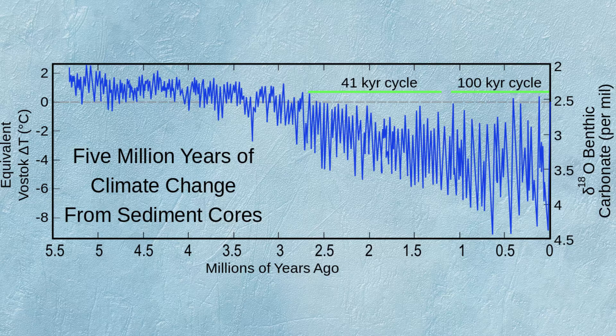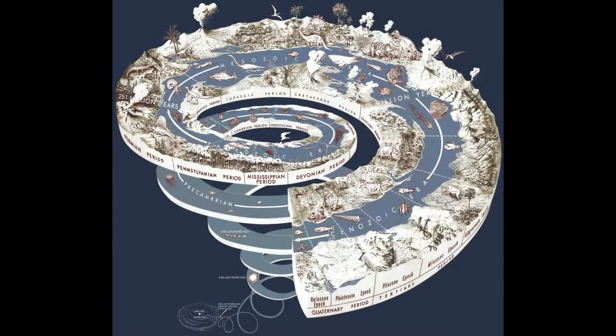Currently we are in the icehouse state. We observe thick ice sheets on the poles of our planet and numerous valley glaciers in high mountains. This current period began about 34 million years ago at the beginning of the late Cenozoic period, since which time ice sheets and glaciers have spread and melted away but never totally disappeared.